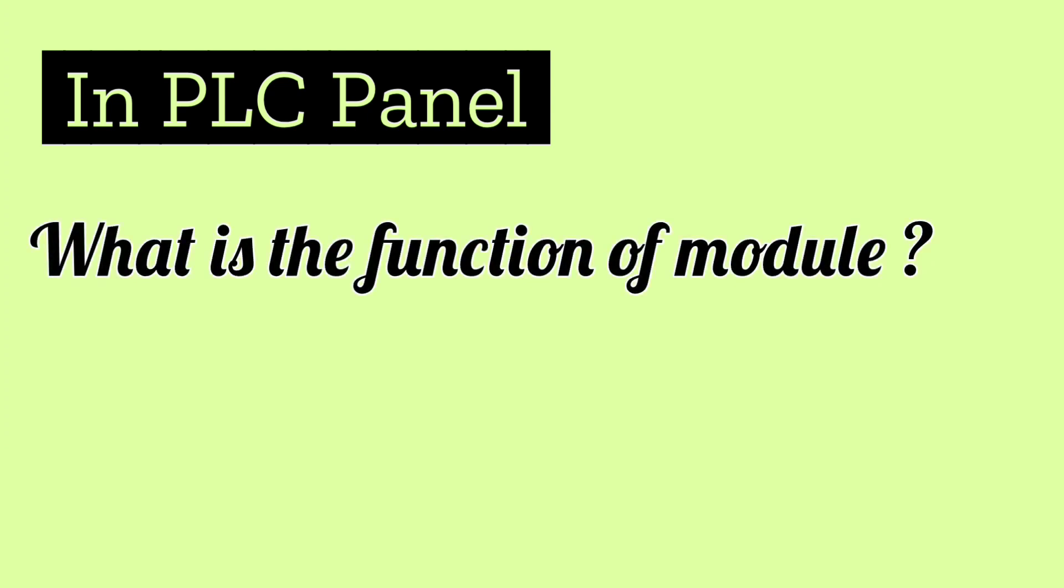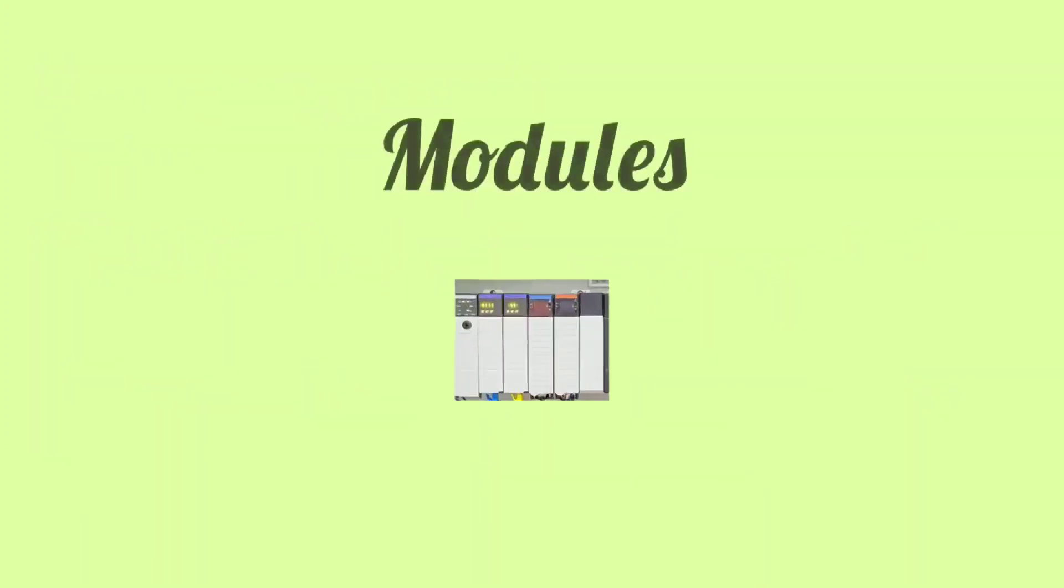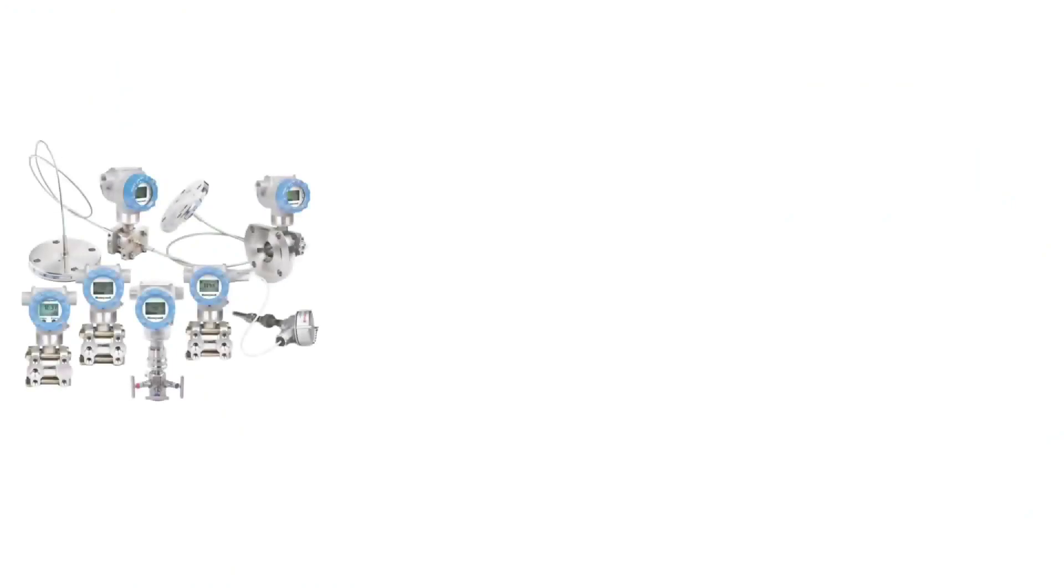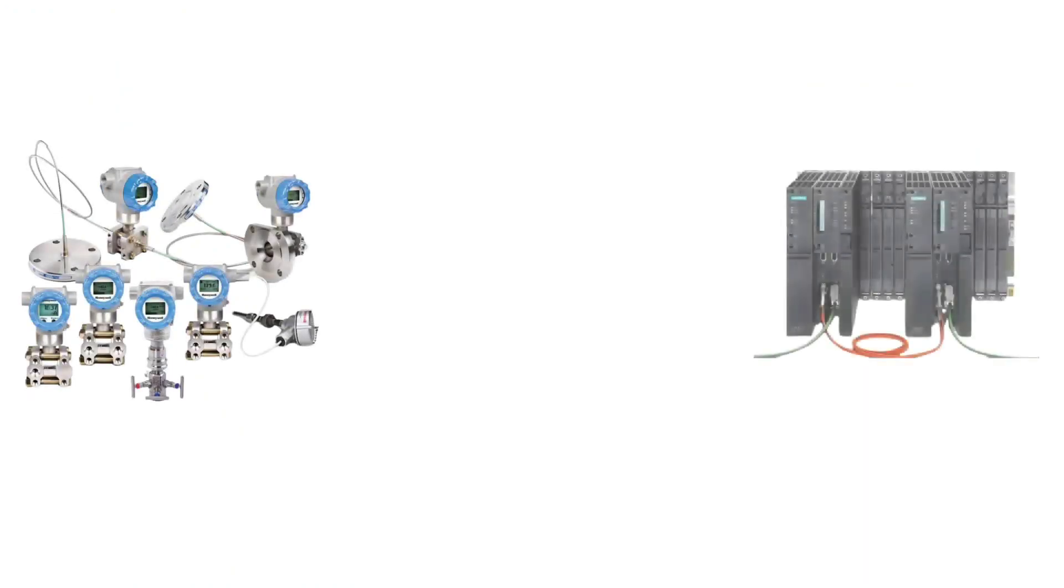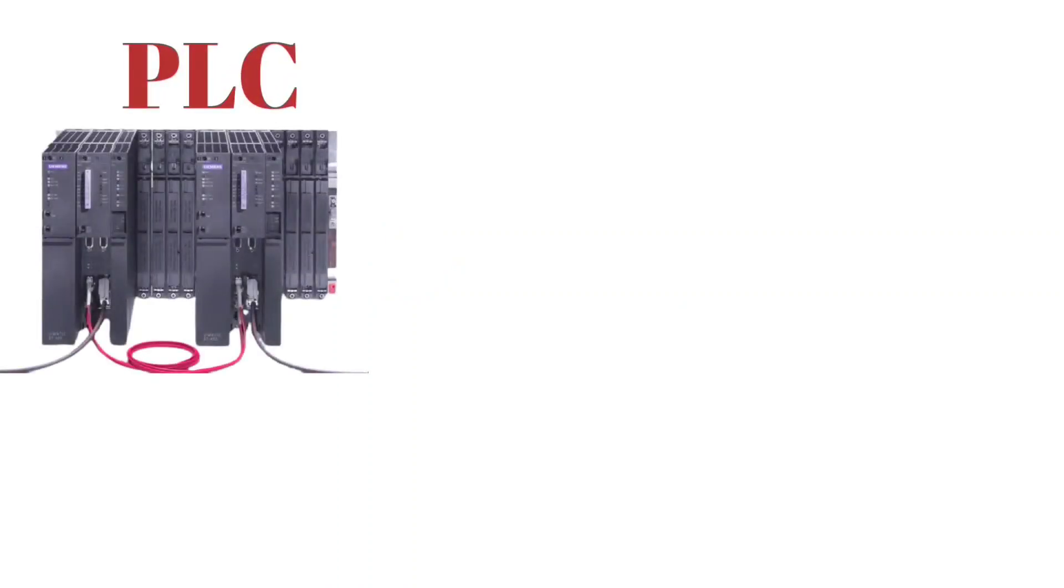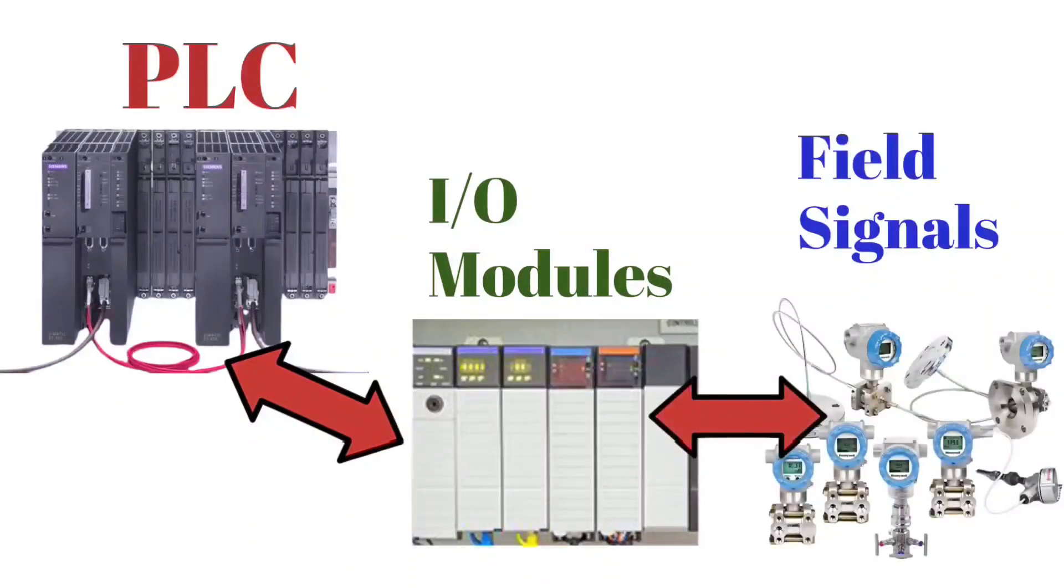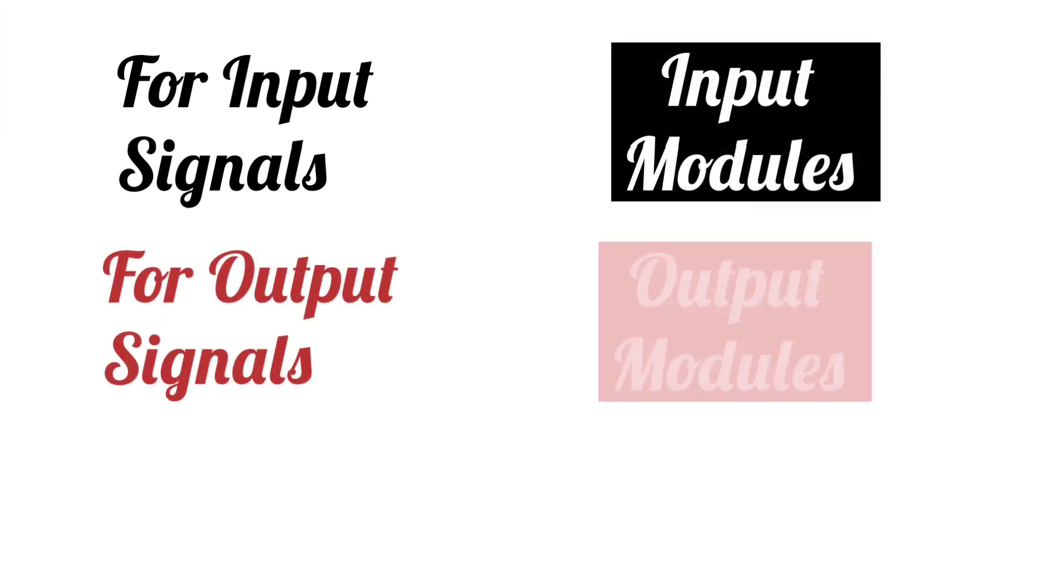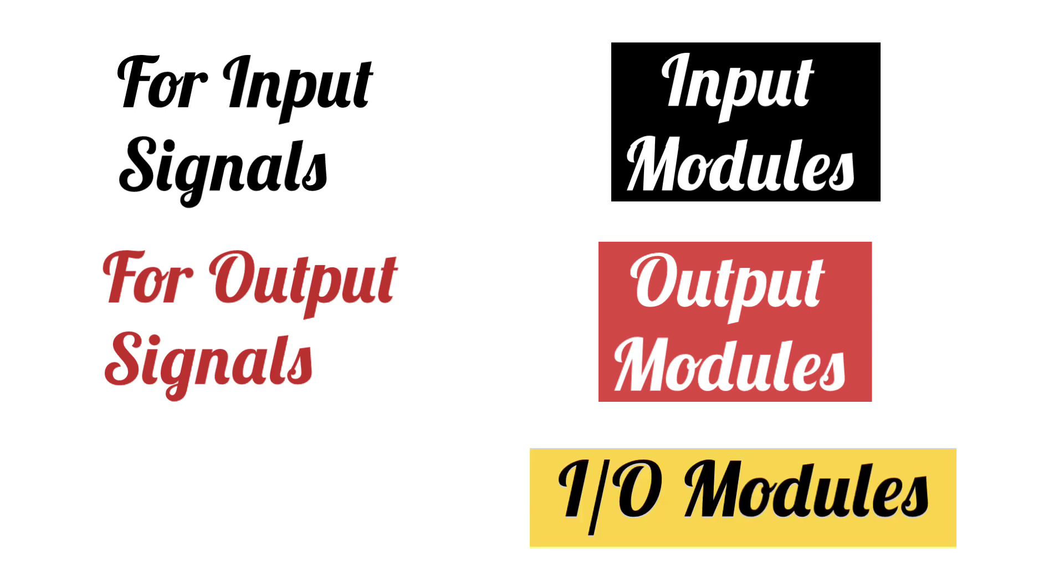Next question can be asked from you: In PLC DCS panel, what is the function of modules? What are types of modules? Modules provide interfacing between field signals and PLC. Field signals are not connected directly to PLC, but are connected through modules. The signal flow will be something like this: PLC, I/O modules, field signals. I/O modules means input-output modules. For input signals, input modules. For output signals, output modules.